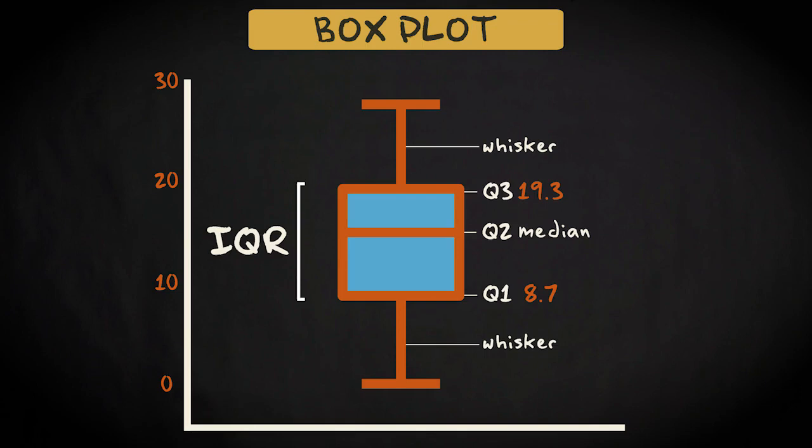How do you decide how long the whisker should be? Well, let's go back to the values in our example. We have detected Q2, Q1, and Q3, and the IQR.